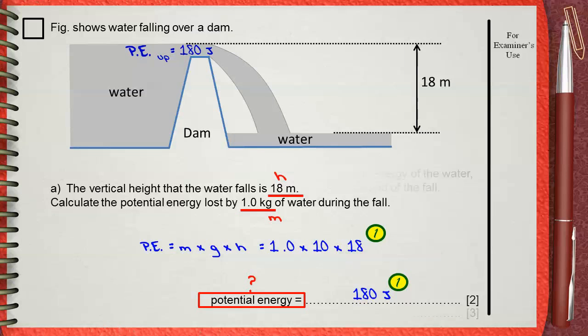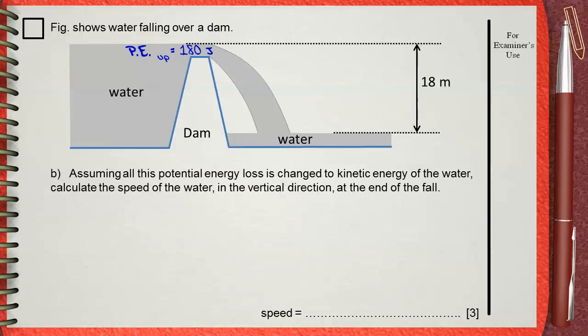Question B. Assuming all this potential energy loss is changed to kinetic energy of the water, calculate the speed of the water in the vertical direction at the end of the fall.